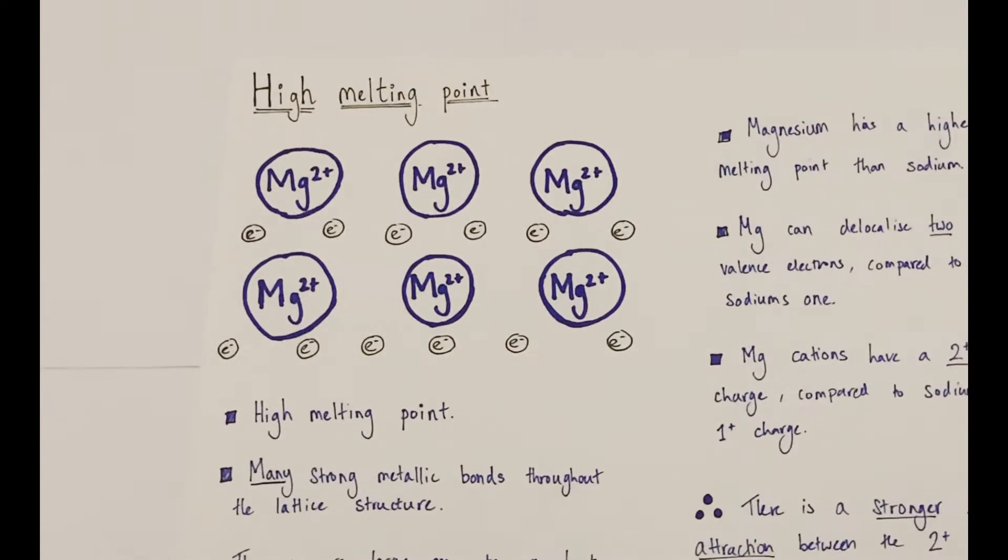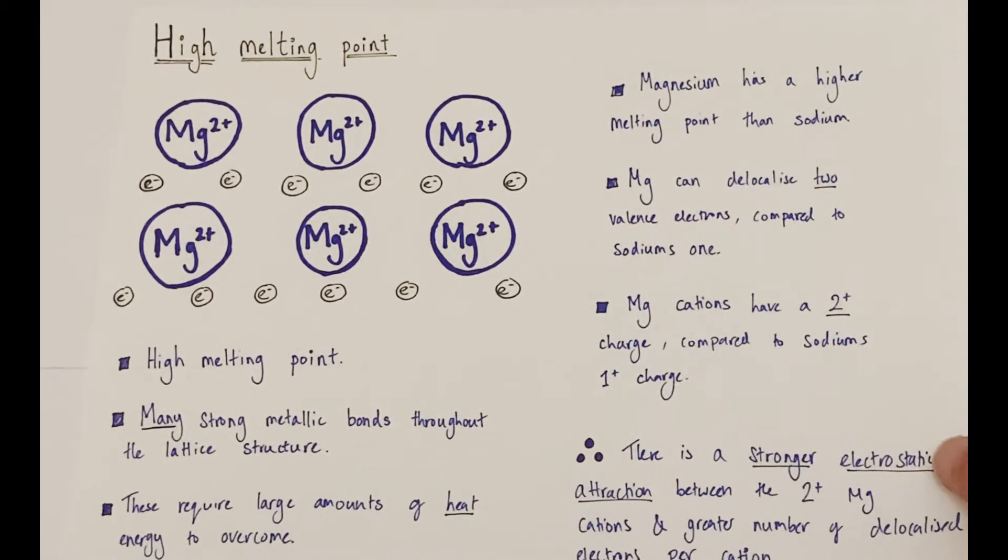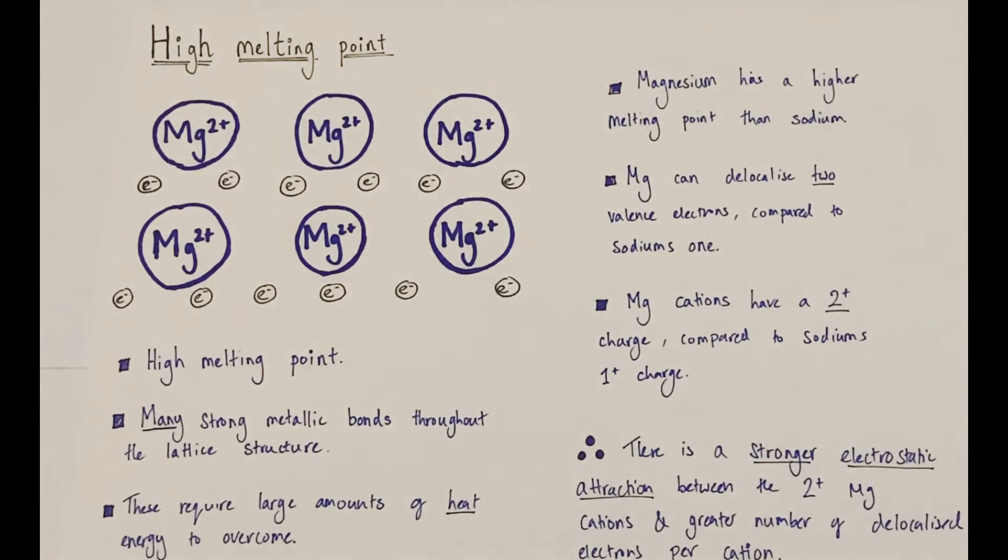So what sort of properties do we expect metals to have? Well, one of the key properties is they have high melting points. We can consider why that would be the case. So why do metals have high melting points?